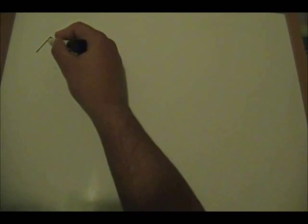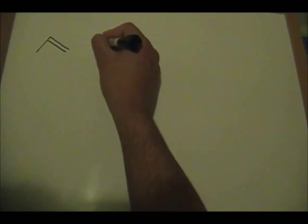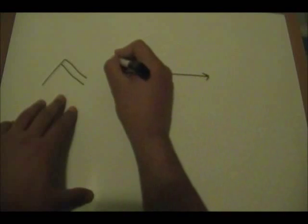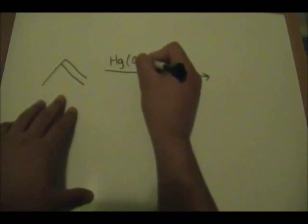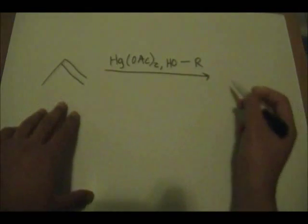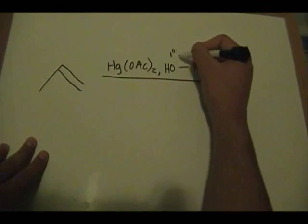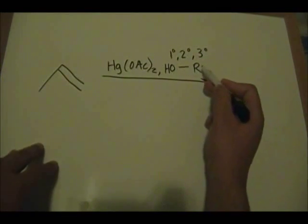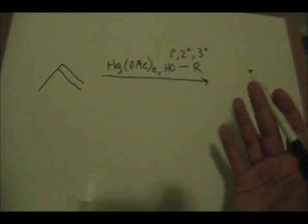The alkoxymercuration reaction begins with an alkene as your starting material. You react it with mercury acetate and any type of alcohol — it could be a primary, secondary, or tertiary alcohol. This R is referring to any type of carbon group, any type of chain or alkyl group. The final reagent you use in this reaction is sodium borohydride.